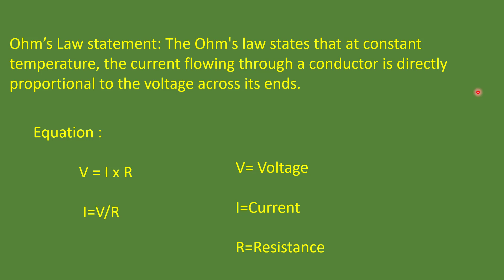The second equation is I equals V divided by R — current equals voltage divided by resistance. The third is resistance equals voltage divided by current, R equals V divided by I.